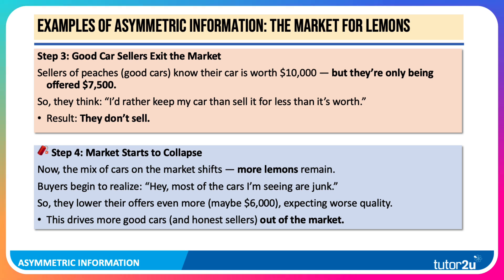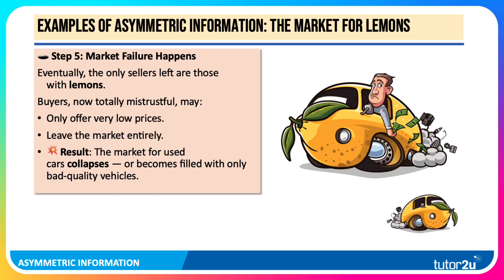As a result, the mix of cars shifts — a bigger percentage of lemons remains. Buyers begin to realise most of the cars they're looking at are basically junk, so they lower their offer even more, perhaps down to $6,000 from $7,500, expecting worse quality. It's a form of hedging behaviour; they don't want to get lumbered with a lemon. This drives more good cars and honest sellers out of the market. Eventually, the only sellers left in Akerlof's famous paper were those with poor-quality cars to sell. Buyers become totally mistrustful, offering very low prices or leaving the market entirely — risking full market failure because the market is stuffed with lemons.